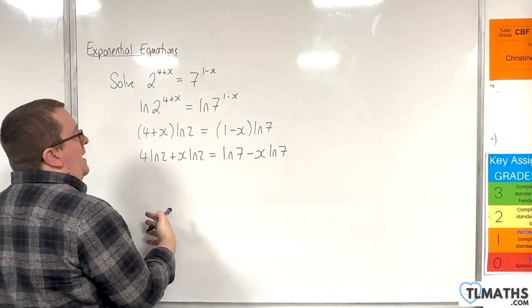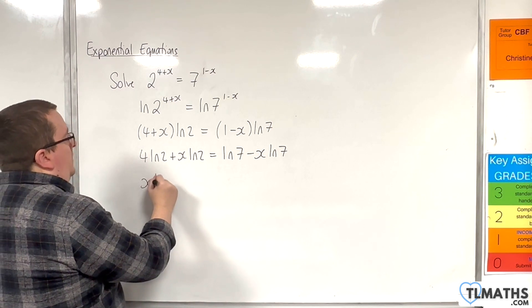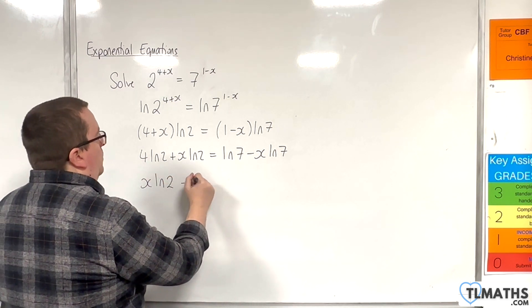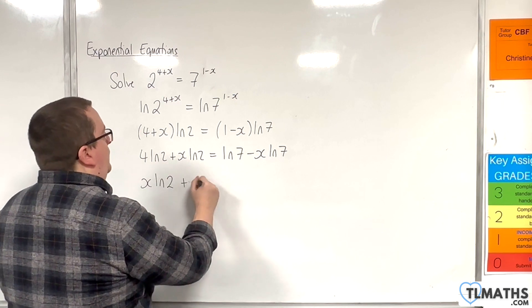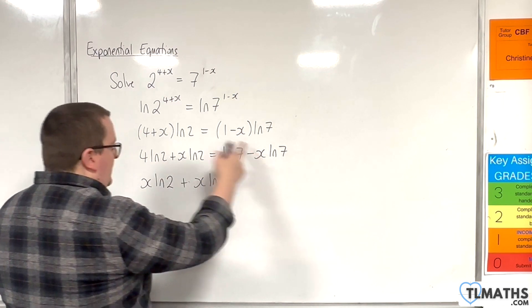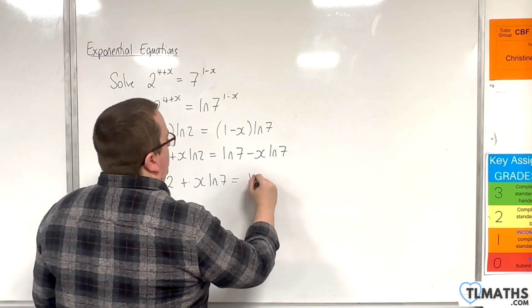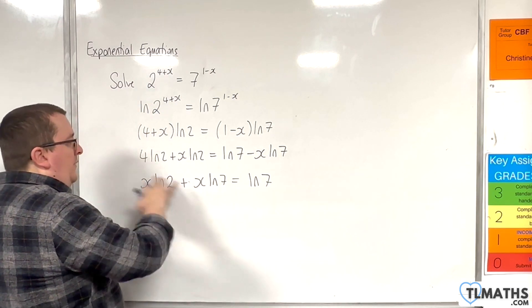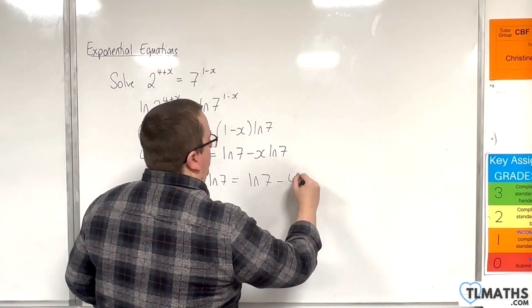I'm going to get all the x's on the left-hand side, so x natural log of 2 plus x natural log of 7, so adding that to both sides. I've got the natural log of 7 there already, take 4 natural log of 2 from both sides.